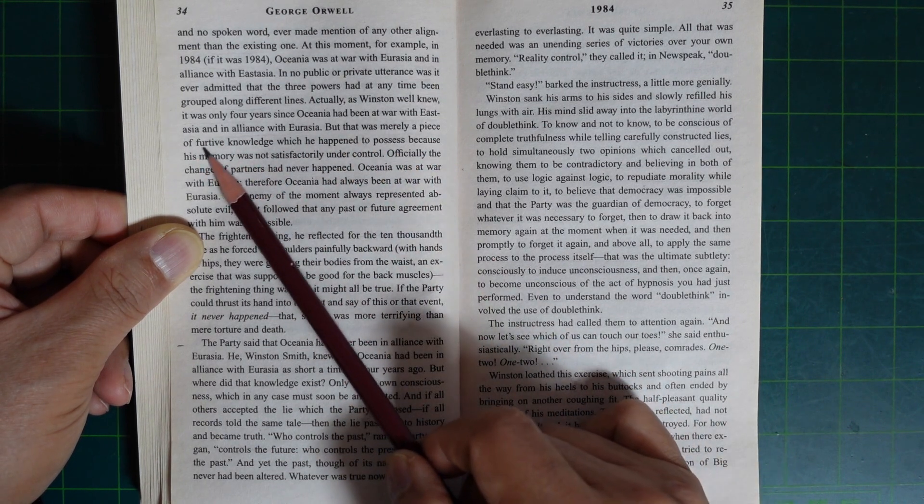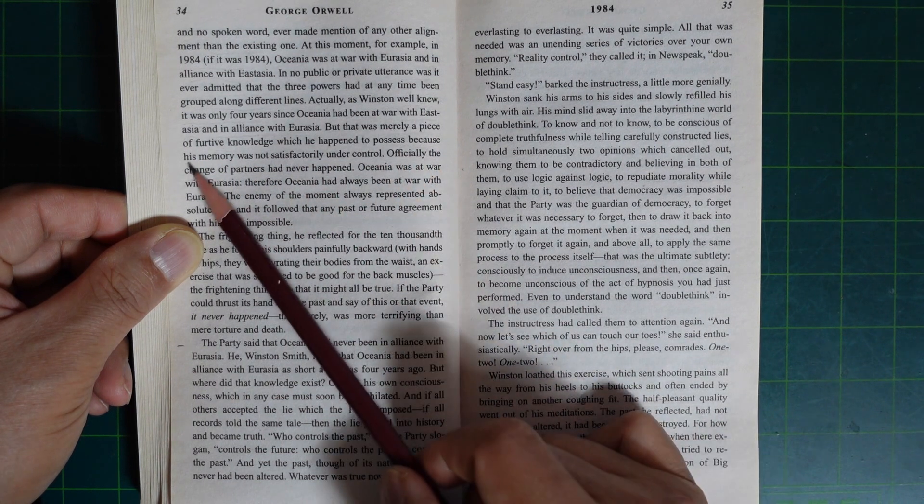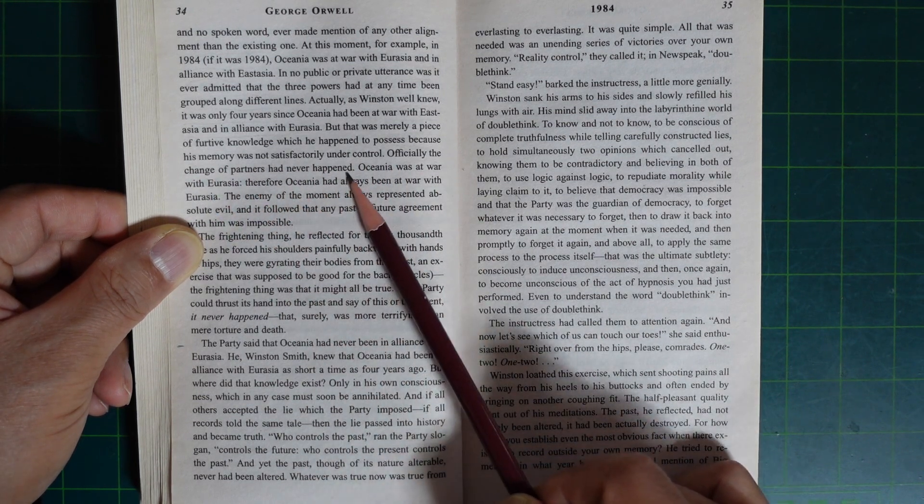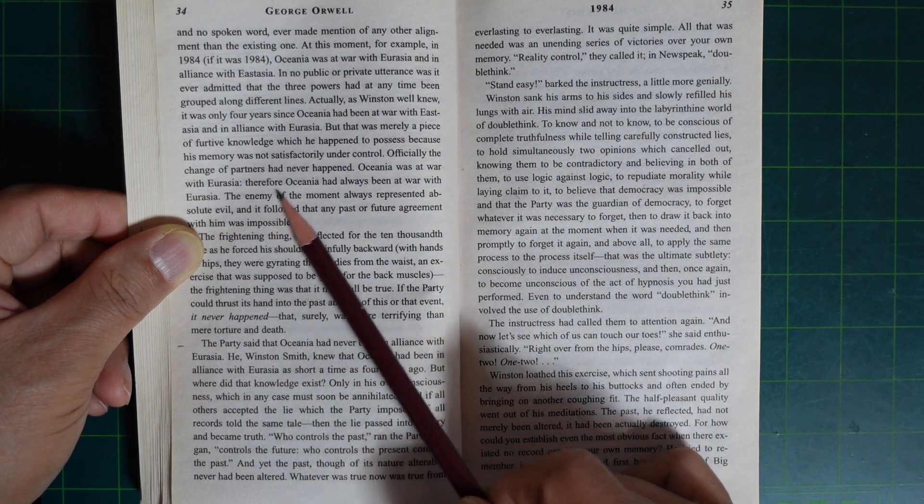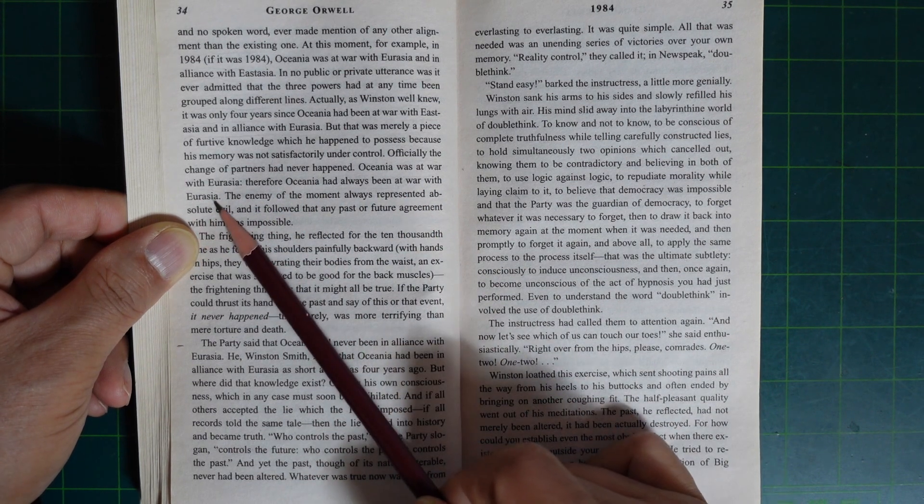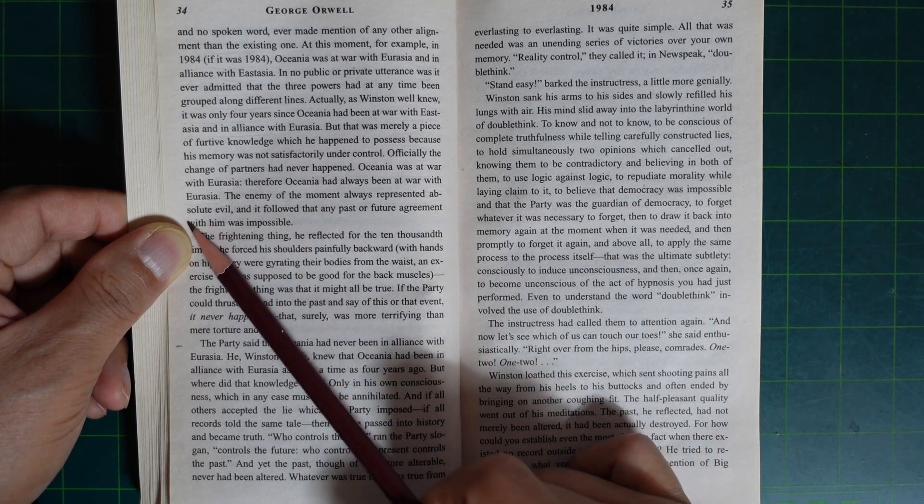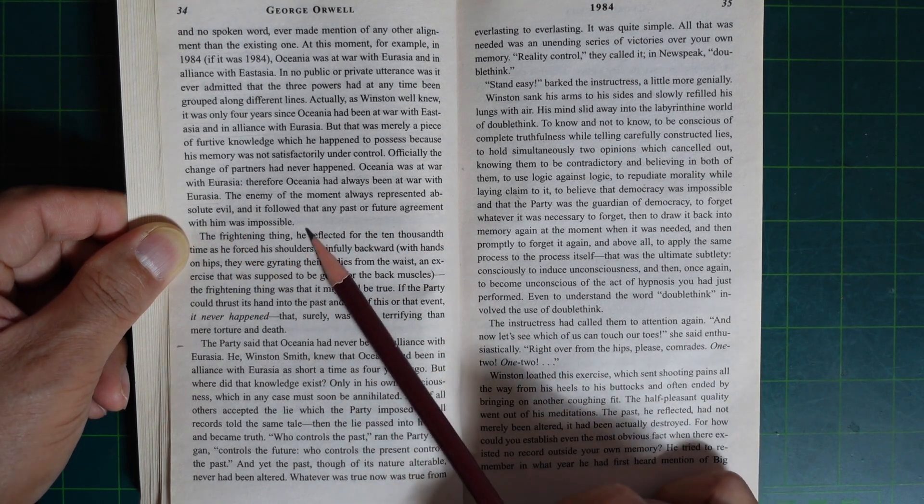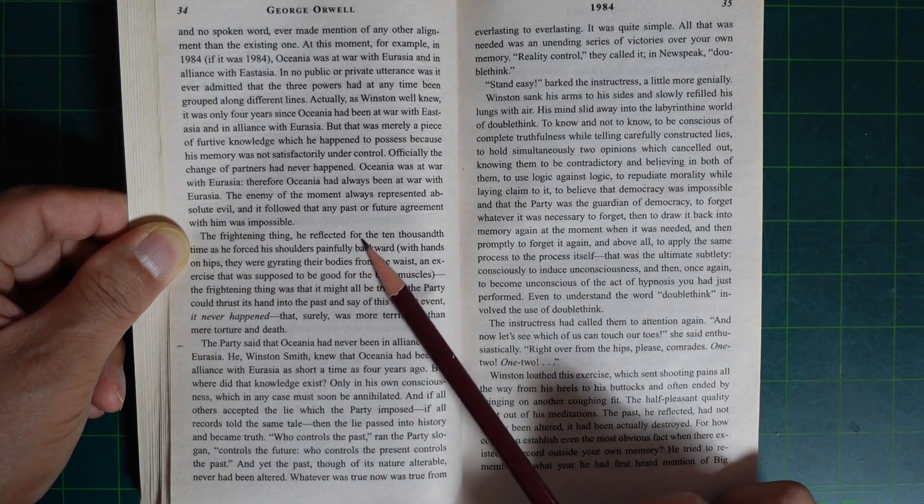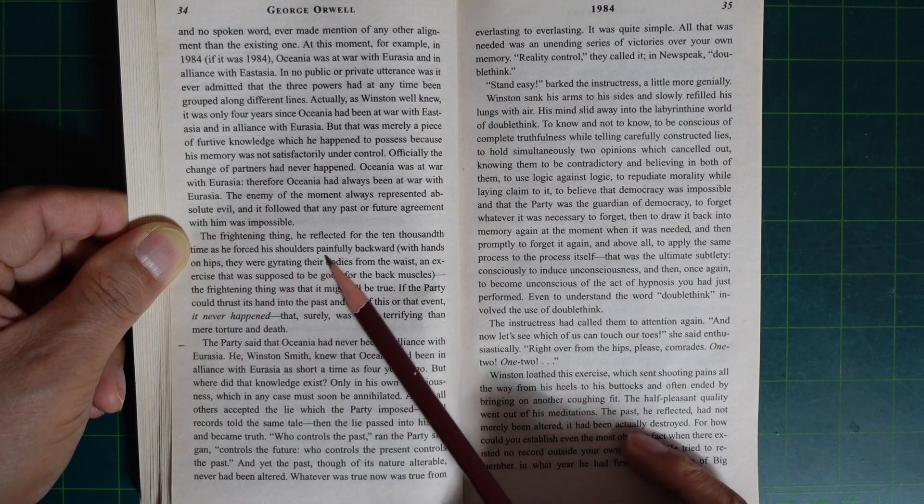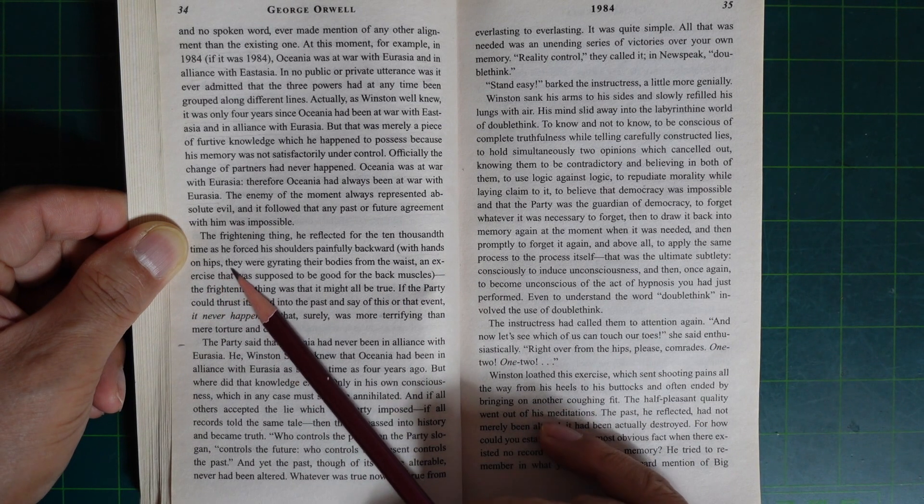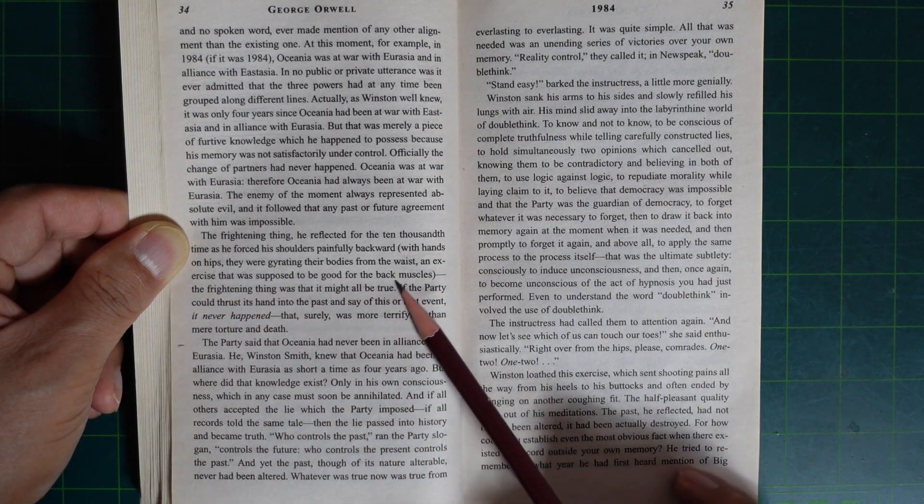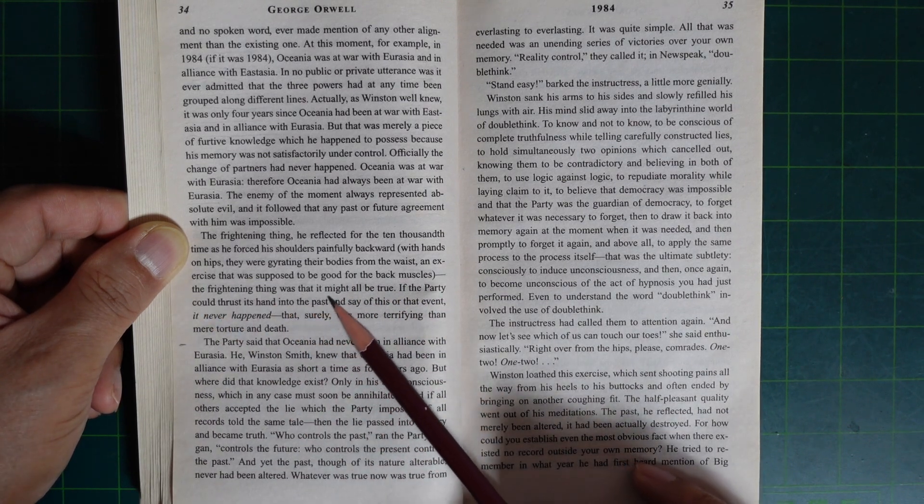In no public or private utterance was it ever admitted that the three powers had at any time been grouped along different lines. Actually, as Winston well knew, it was only four years since Oceania had been at war with Eastasia and in alliance with Eurasia. But that was merely a piece of furtive knowledge which he happened to possess because his memory was not satisfactorily under control. Officially, the change of partners had never happened.